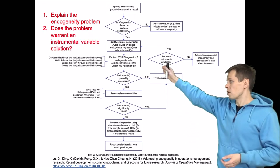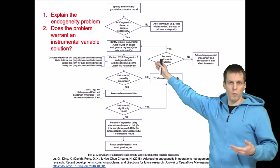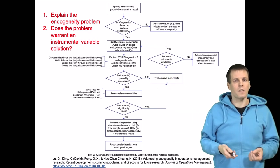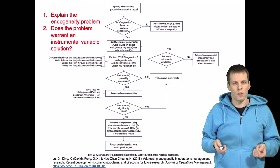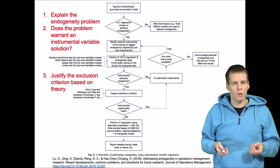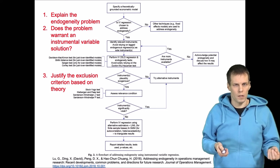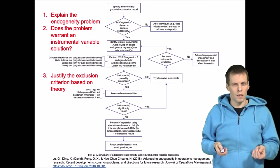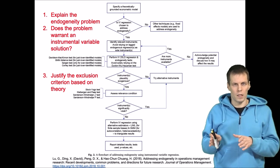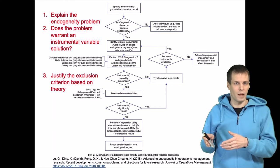You need to answer the question: does the problem warrant an instrumental variable source? If it does, then you need to go and look for instruments, and when you look for instruments, it is important to justify the exclusion criterion. So why do you think that the instrument that you have is uncorrelated with all the omitted causes of the dependent variable?